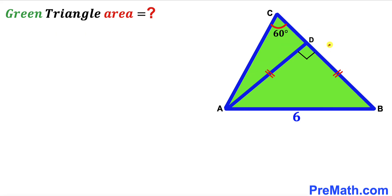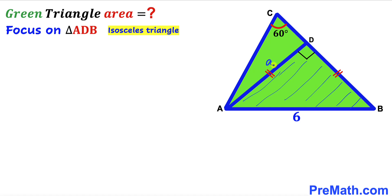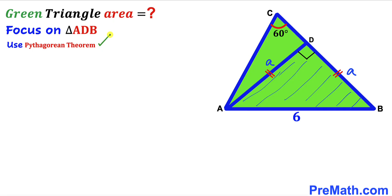Our task is to find side BC and height AD. Focusing on triangle ADB, we can see it is both a right triangle and an isosceles triangle. Since AD equals BD, we label both as lowercase a. We apply the Pythagorean theorem: a² + b² = c², where the hypotenuse is 6 and both legs are a.